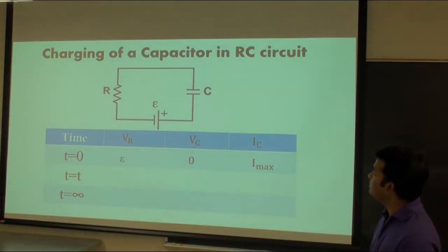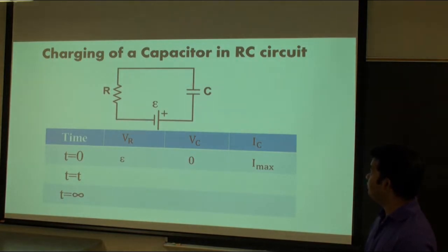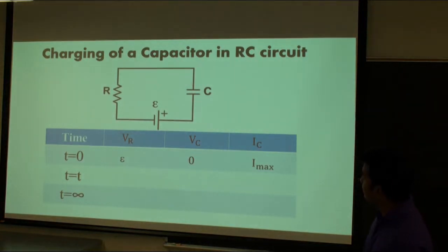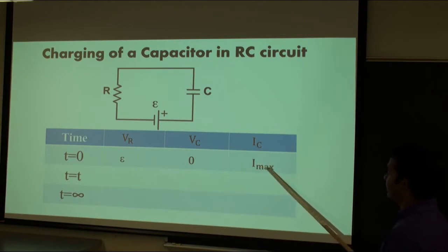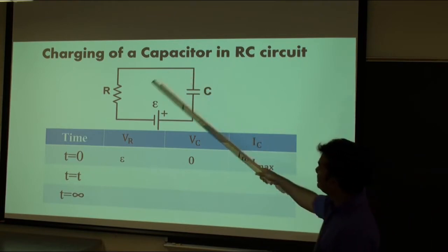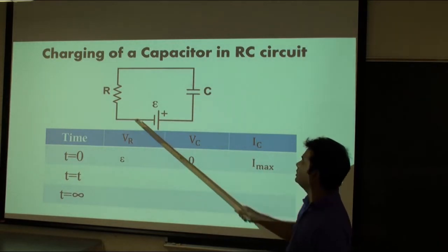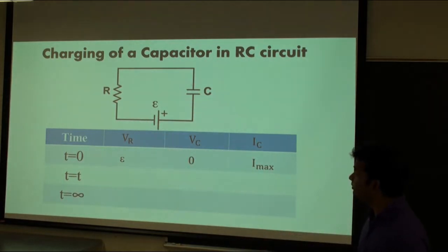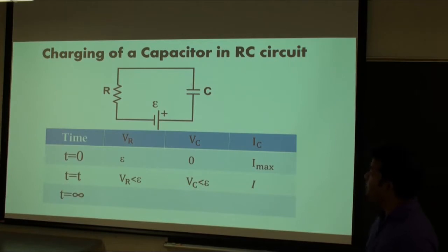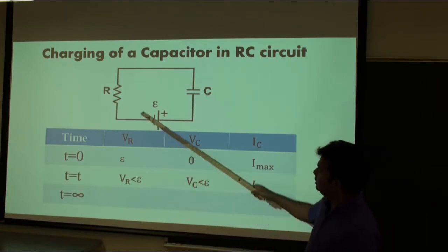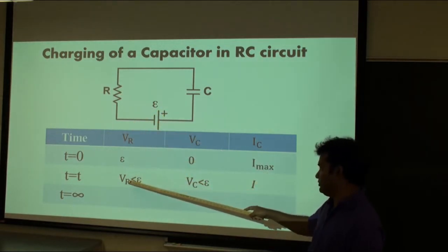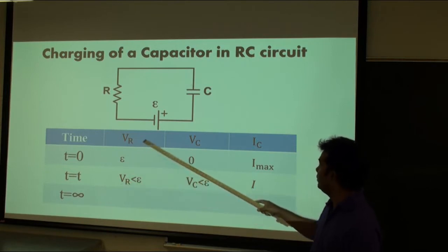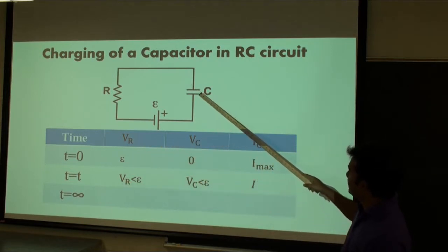We know that Q equals C times V, or V equals Q over C. The current in the circuit will be maximum, so IC will be I max. It is a series circuit so current through the capacitor, the resistor, or the battery will be the same. If we consider some intermediate time, then the potential difference across the resistor will decrease.